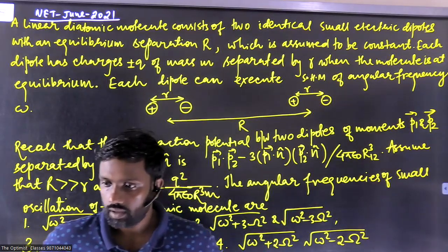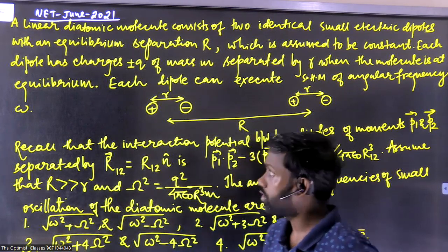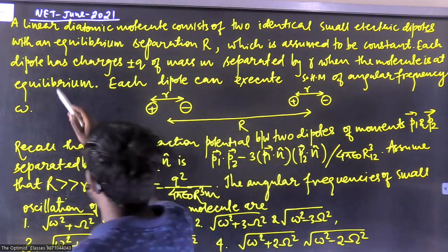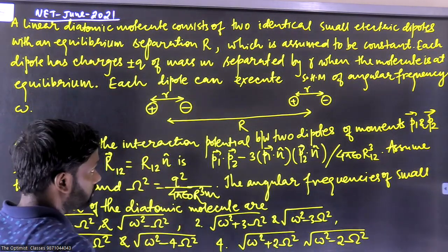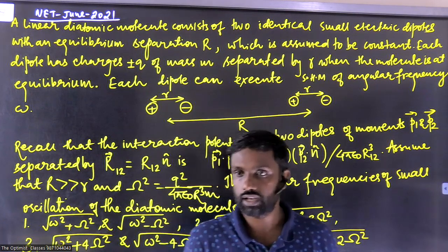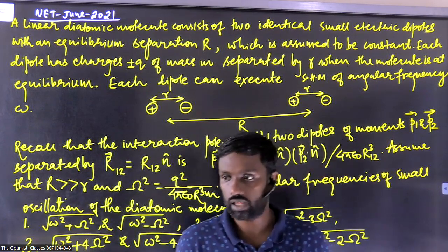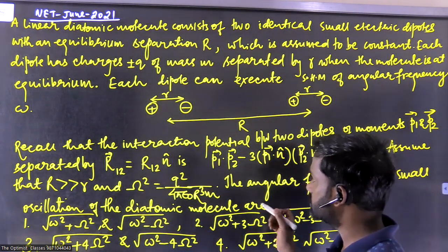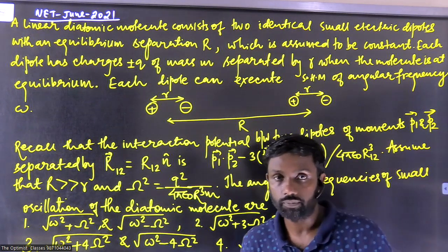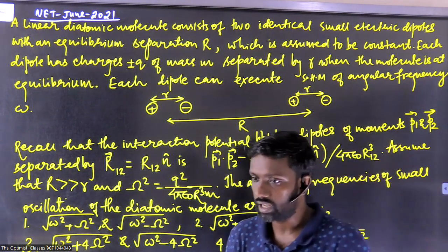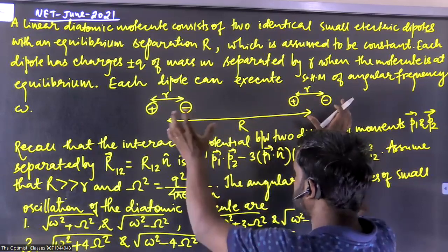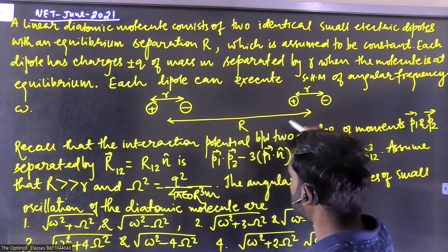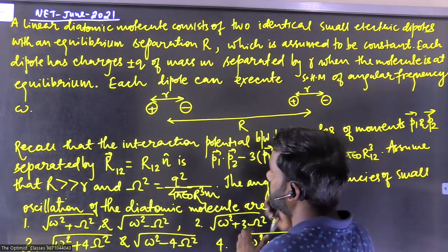Hello everyone. In this video I'm going to discuss the solution of a very good question which was asked in the NET exam, specifically NET June 2021. The question is related to both classical mechanics and electromagnetic theory — basically electrostatics. The question involves finding the angular frequency of vibration of a diatomic molecule that consists of two dipoles.